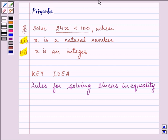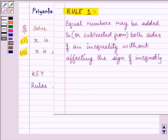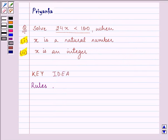Rule 1 says, equal numbers may be added to or subtracted from both sides of an inequality without affecting the sign of inequality. That means, to both these sides, that is the left-hand side and the right-hand side, we can add or subtract an equal number without affecting the sign of the inequality. This is the sign of the inequality we are talking about.